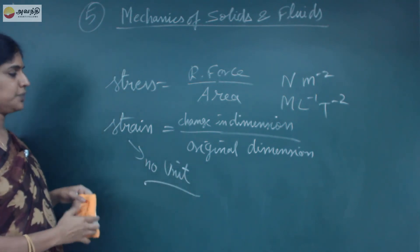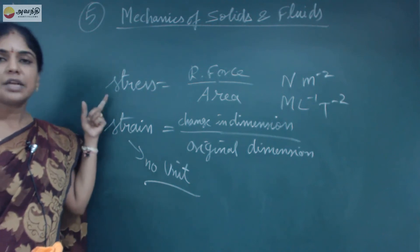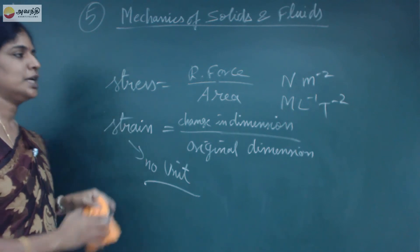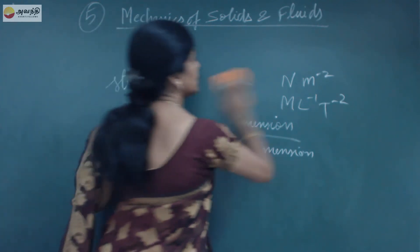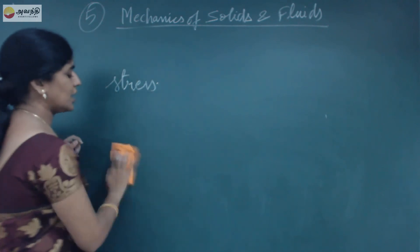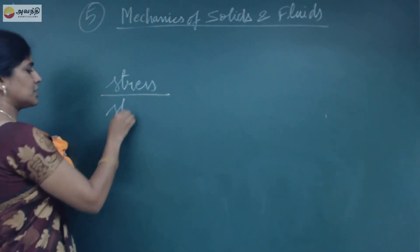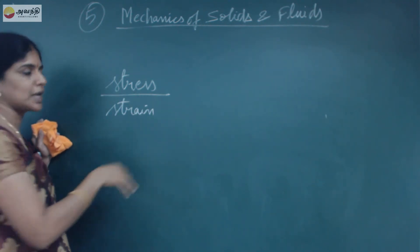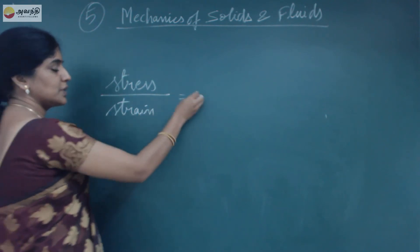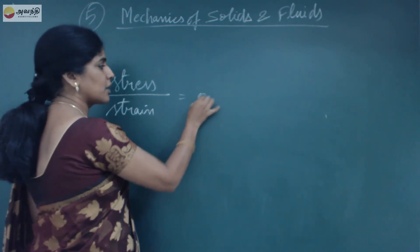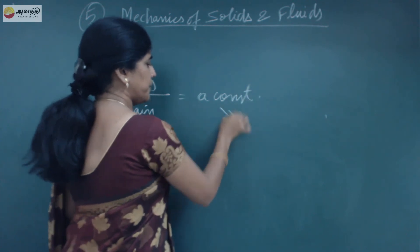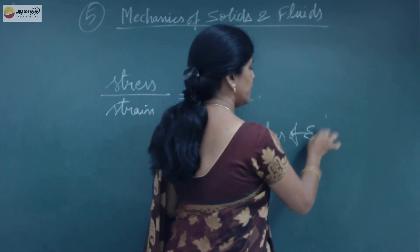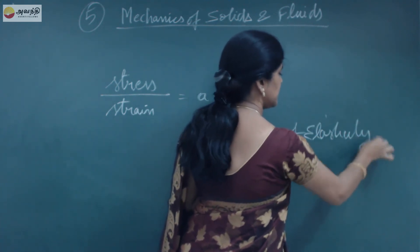Now we will see the ratio of stress by strain. Within the elastic limit, this ratio between stress and strain will be a constant. Beyond that it won't be a constant. This was stated by Robert Hooke and we call it Hooke's law. That constant we call it as the modulus of elasticity.